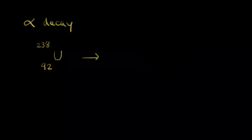Let's look at three types of radioactive decay. We'll start with alpha decay. In alpha decay, an alpha particle is ejected from an unstable nucleus. Here's our unstable nucleus — uranium-238. An alpha particle has the same composition as a helium nucleus.